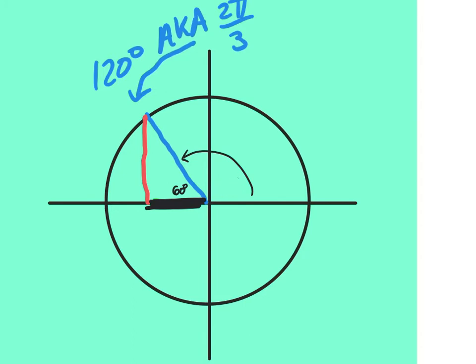If I ask what is the sine of 120, you draw the blue line at 120, then make it into a right triangle — stop on the circle and drop down to the x-axis. I know there's another way you could draw that triangle, but that way is wrong. You have to draw it this way. The reference angle here is 60 degrees.